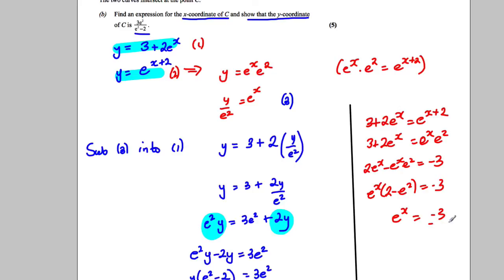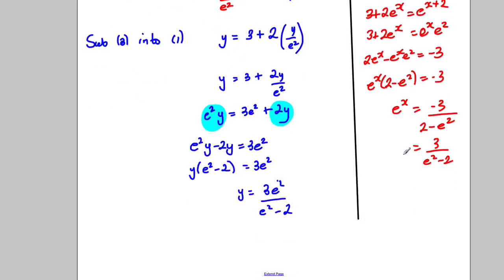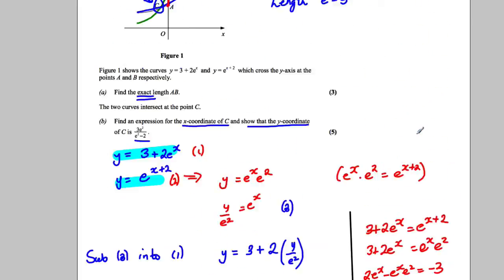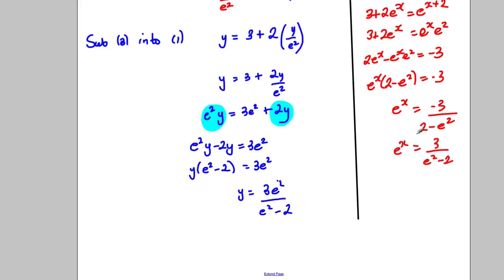I could have rewritten that as 3 over (e^2 - 2) just multiplying top and bottom by negative 1. So that's e^x and it asked for the expression for the x ordinate. So I could have said therefore x is the natural logarithm of 3 over (e^2 - 2) and I would be done in that regard.